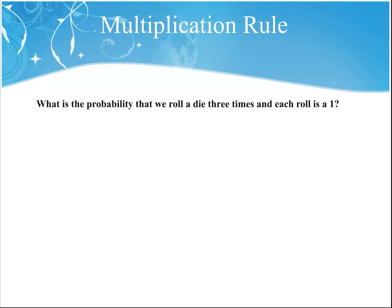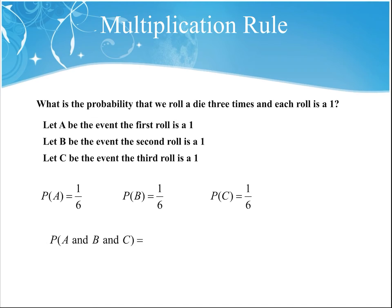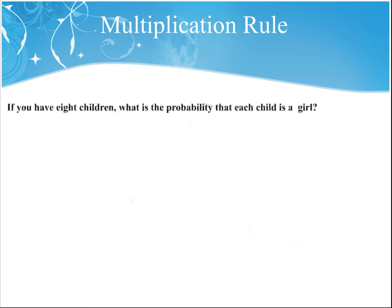What is the probability that we roll a die three times and each roll is a one? Let A be the event that the first roll is a one, B be the event that the second roll is a one, and C be the event that the third roll is a one. The probability of rolling a one on a regular six-sided die is 1/6 each time. Every time you roll a die, the results aren't dependent on previous rolls. So the probability of all three events happening is 1/6 times 1/6 times 1/6, or 1/216.